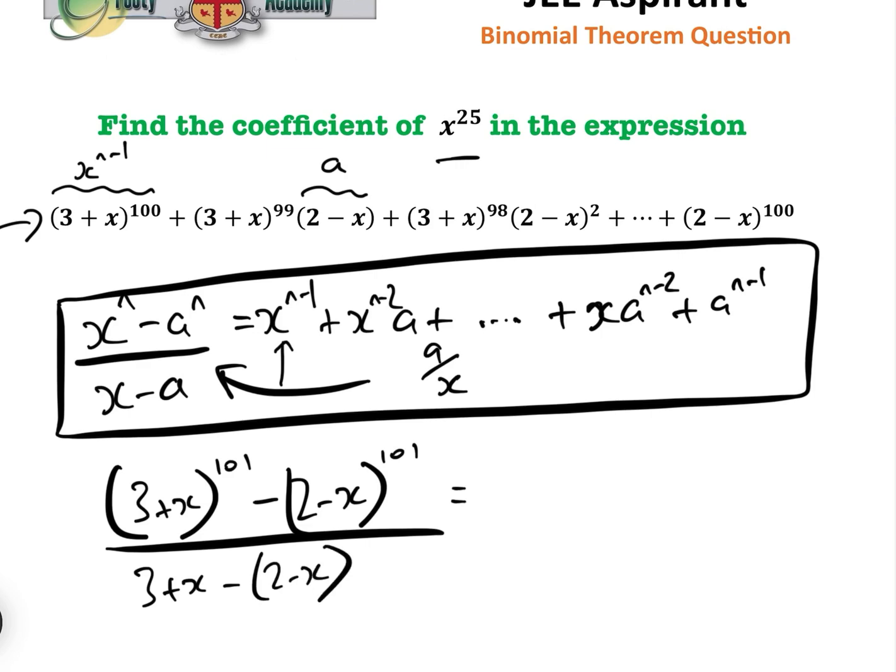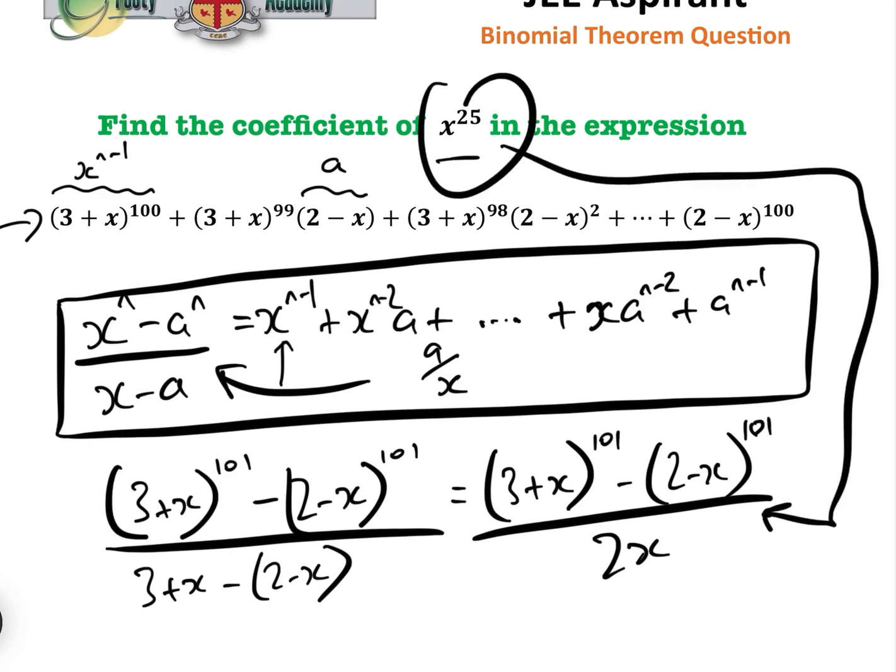So it's the same thing, and just simplifying that we get 3 plus x to the 101 minus 2 minus x to the 101 over 2x. So what we need to do now is find the coefficient of x to the 25 in this, which is much simpler.